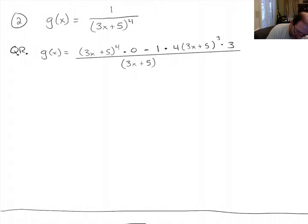(3x + 5) to the fourth. When you square that you get it to the eighth. So let's see. This whole bit right here is 0. This over here becomes minus 12 times (3x + 5) cubed over (3x + 5) to the eighth.